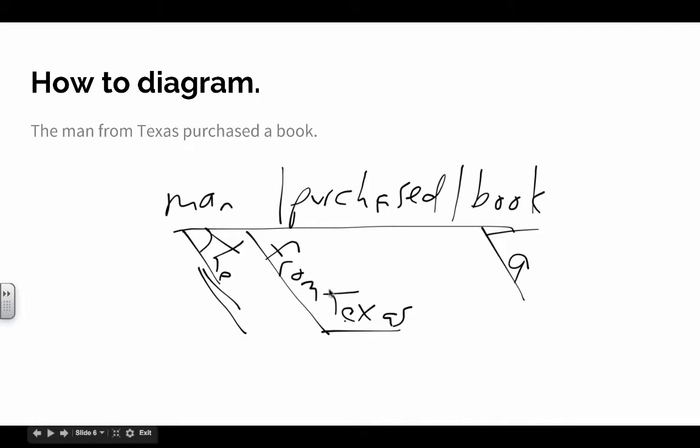So right here, the man from, from is modifying man, and then Texas is the object of the preposition. The sentence being, the man from Texas purchased a book. So obviously, man is the noun, the is modifying man, from, and then Texas, the object becomes a flat, horizontal line connected to the preposition.